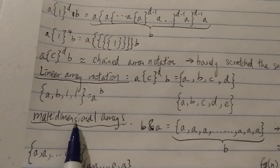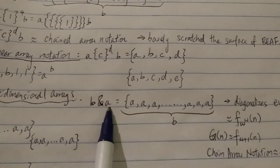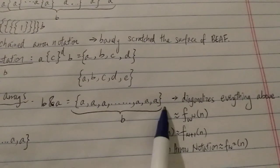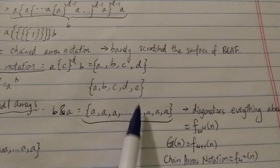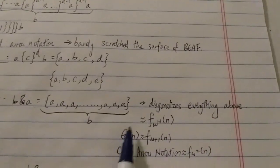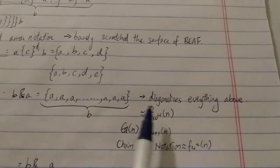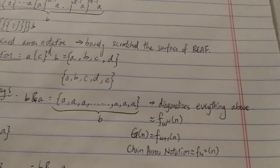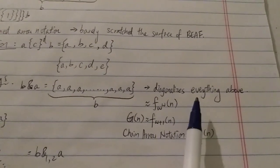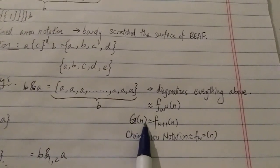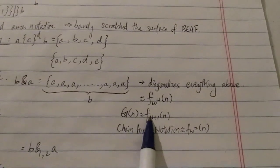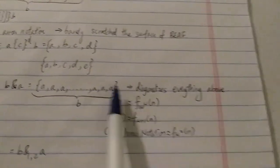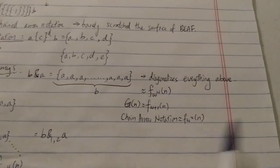Next, you have multi-dimensional arrays, written in a new form where B and A gives a bracket with B number of A's inside. This diagonalizes everything done so far, and this has a growth rate of around omega to the power of omega in the fast-growing hierarchy. The famous G sequence from Graham's number has a growth rate of around f(omega + 1), and the chain arrow notation is around f(omega squared). This multi-dimensional array already grows much much quicker than the chain arrow notation.